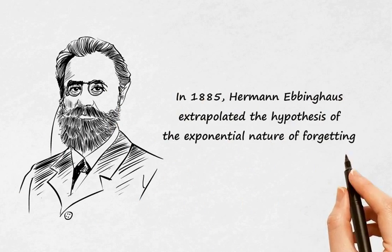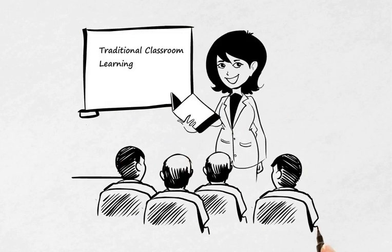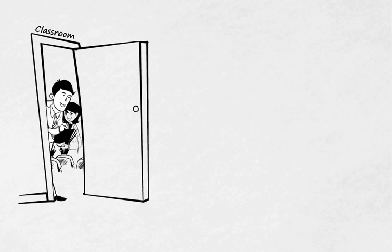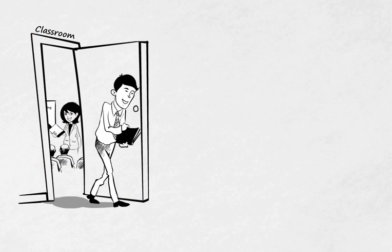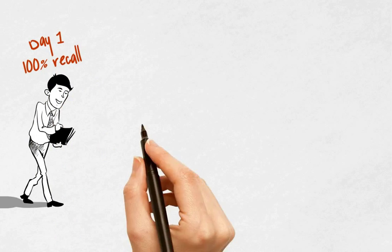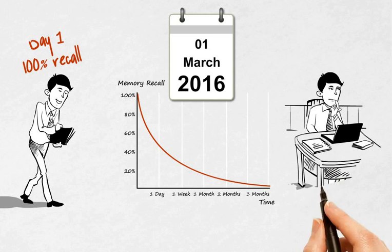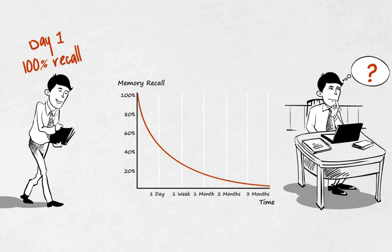In 1885, Hermann Ebbinghaus extrapolated the hypothesis of the exponential nature of forgetting. Traditional classrooms have less effect in supporting individuals' knowledge retention. Ebbinghaus defined a formula showing that as a result of traditional learning methods, memory retention is high only for the first few days post the learning process.